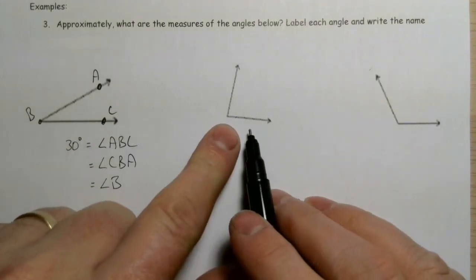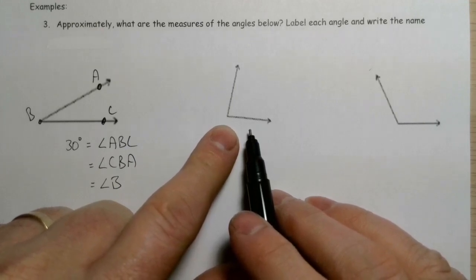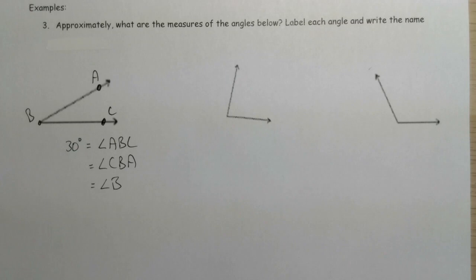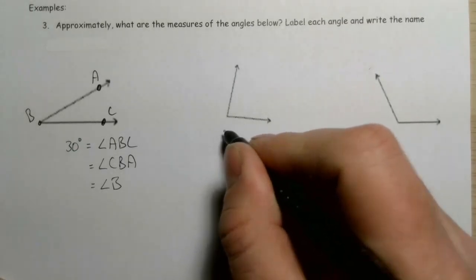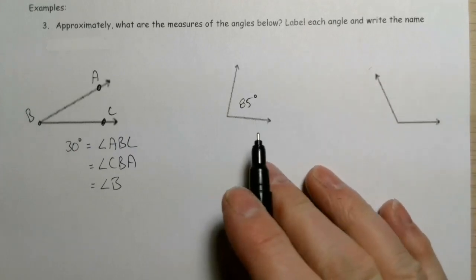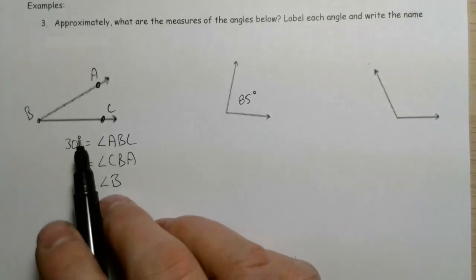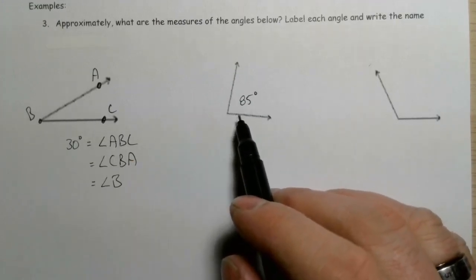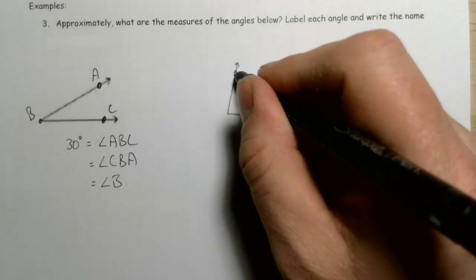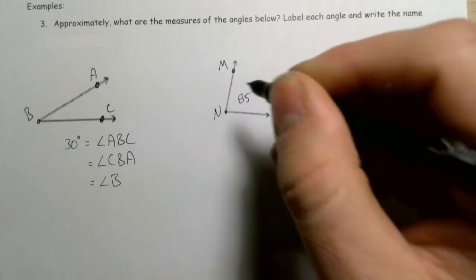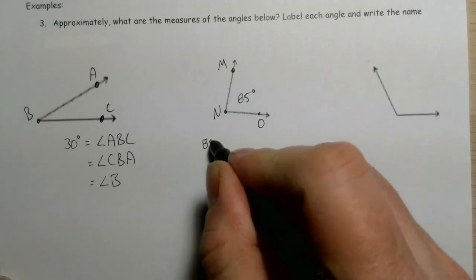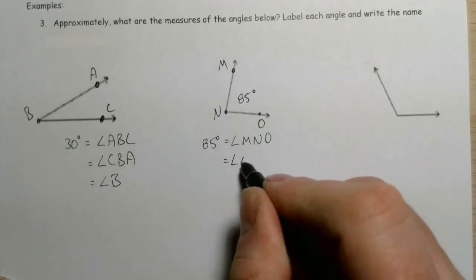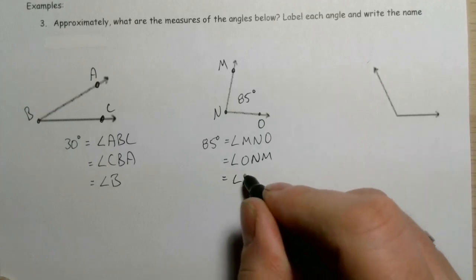This next one looks like it's close to 90, but a little bit less than 90. So I'm going to guess maybe 85 degrees — I'm just approximating using the fact that I know this is really close to 90. Let's label it M, N, O. So 85 degrees is going to be angle MNO — remember, the vertex is in the middle. It could also be angle ONM, or just angle N.